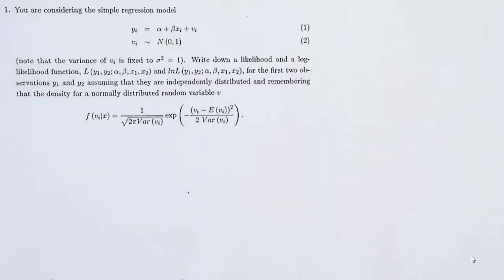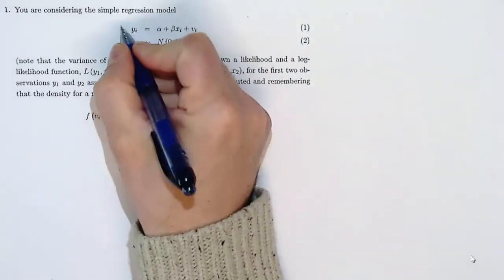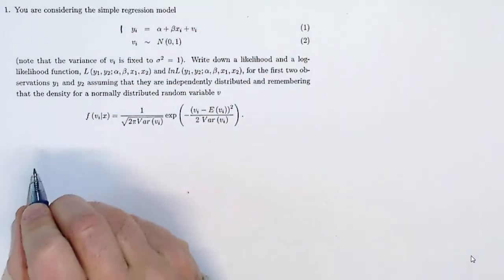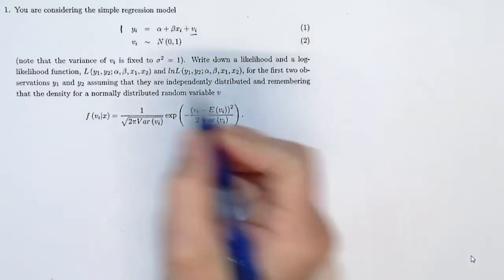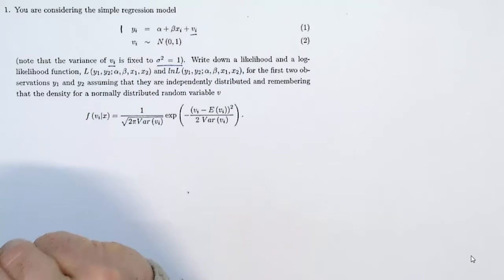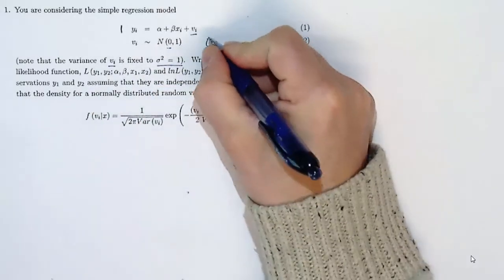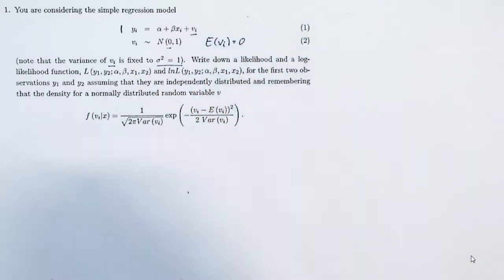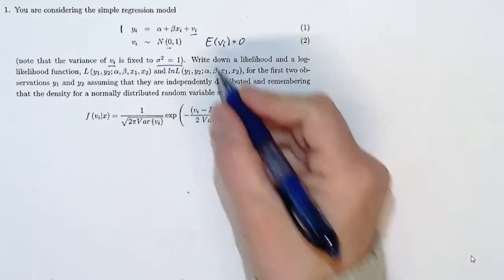Let's work through this maximum likelihood practice question. We have a simple linear regression model with error terms that are normally distributed. Let's note a couple of points here: the error term vi has a fixed variance of 1 and an expected value of 0. So the expected value is as normal, but the fixed variance of 1 will make our life easier.